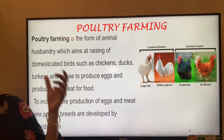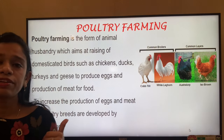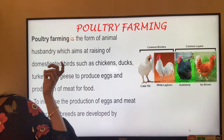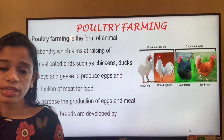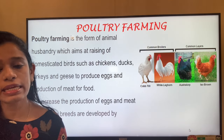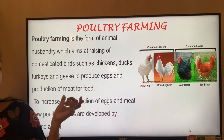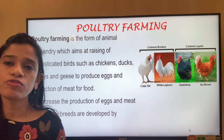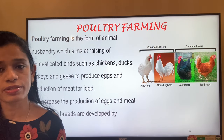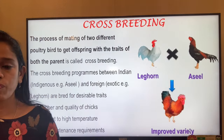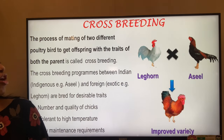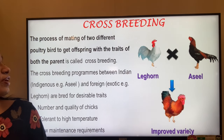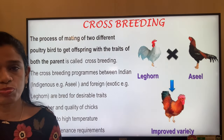Poultry farming raises domesticated birds like chicken, ducks, turkey, and geese to produce eggs and meat for food. To increase production of both, one key process is crossbreeding: mating two different poultry birds to get an offspring with the traits of both parents is called crossbreeding.